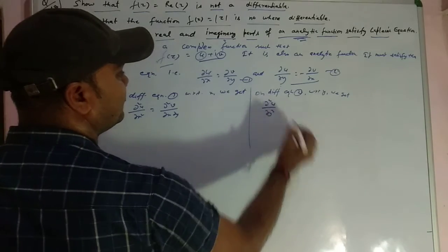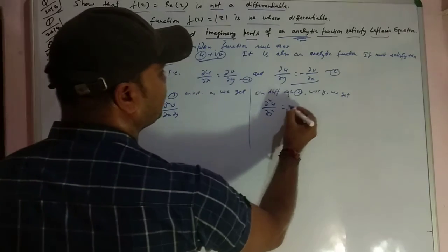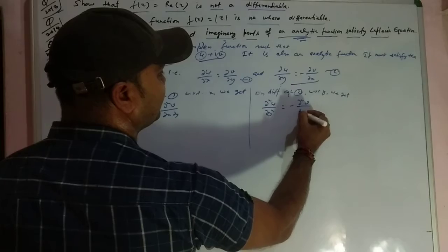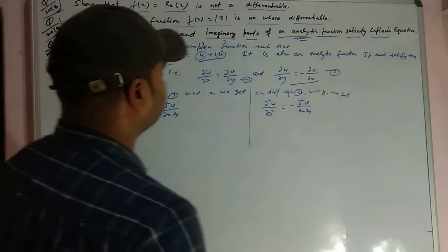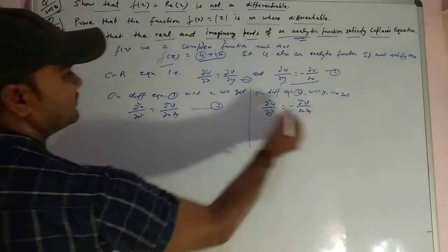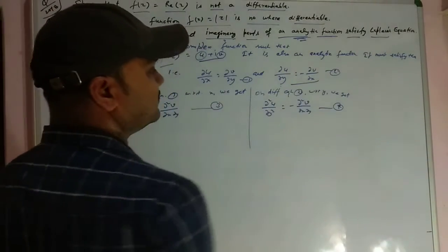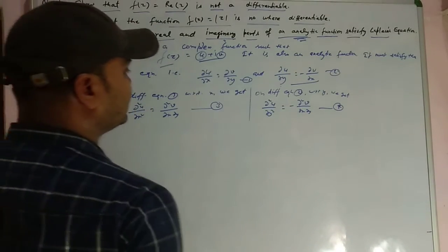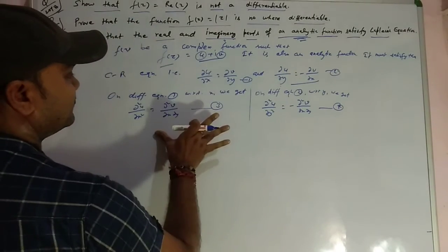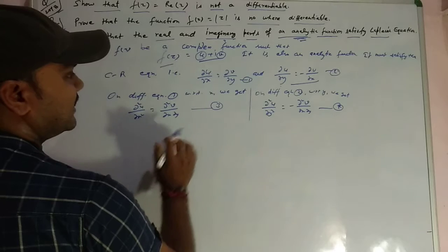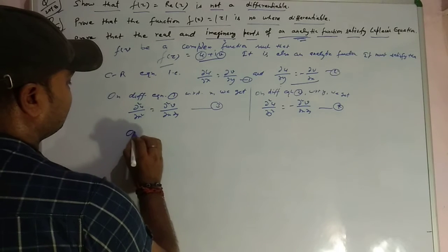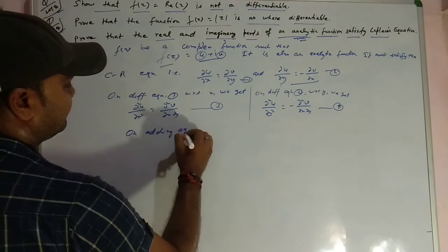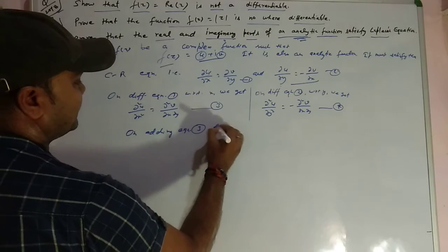तो हमें मिलता है del²u upon del y² equal to minus del²v upon del x del y। इसको मान लेते हैं equation 3, और इसको equation 4। अब इन दोनों equations को जब हम use करेंगे — अगर इन दोनों का हम sum करें, on adding equation 3 and 4.